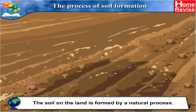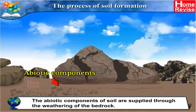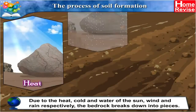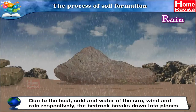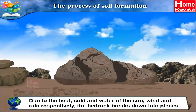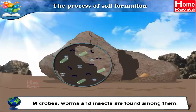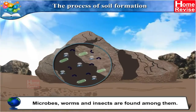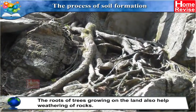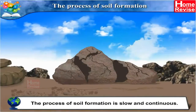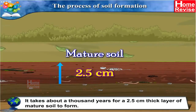The soil on the land is formed by a natural process. The abiotic components of soil are supplied through the weathering of bedrock. Due to the heat, cold and water of the sun, wind and rain, the bedrock breaks down into pieces, forming stones, sand and soil. Microbes, worms, insects and rodents like mice and rats are found among them. The roots of trees also help in the weathering of rocks. The process of soil formation is slow and continuous — it takes about a thousand years for a 2.5 cm thick layer of mature soil to form.